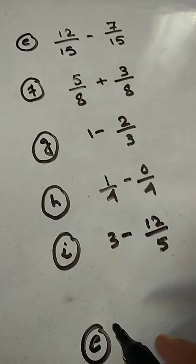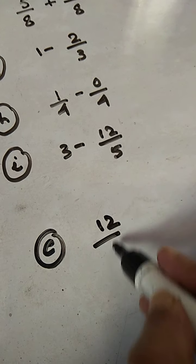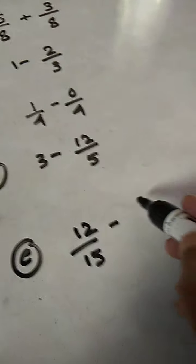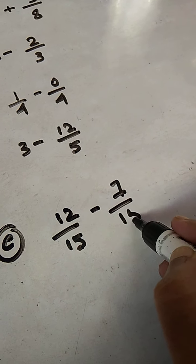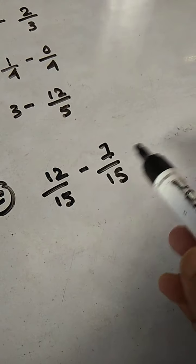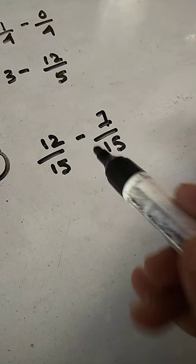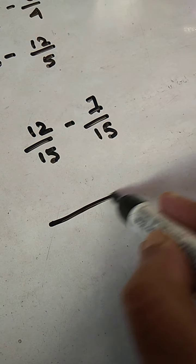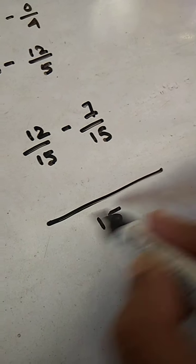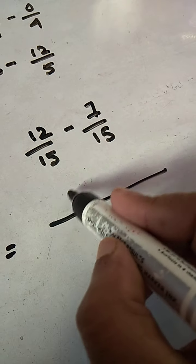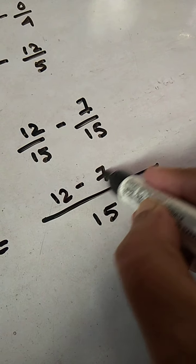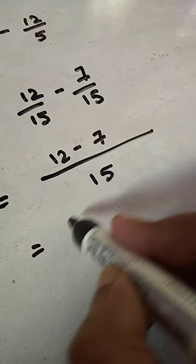E we are having 12 by 15 minus 7 by 15. As we see, these two fractions are carrying the same denominator, so it has become very easy for us. We will make a common denominator now and we will write the numerator with minus 7, that is 12 minus 7. So, 12 minus 7 is what? 5.